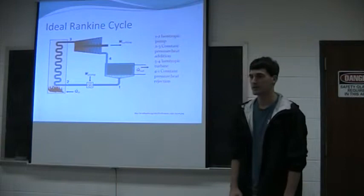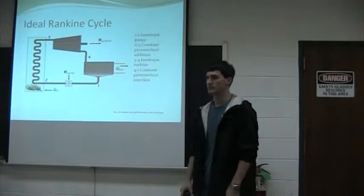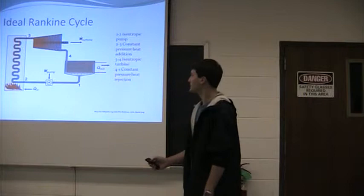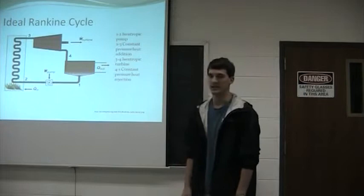Here's the ideal Rankine cycle. I'm just going to briefly describe the process and then go mainly through the results. There's four main components: the pump, the boiler, the turbine, and the condenser. One to two is the pump, isentropic in the ideal situation. Two to three is the boiler, constant pressure heat addition. And three to four is isentropic again. However, you'll see my TS diagram later, it really is not. And four to one is constant pressure heat rejection as it goes back to the liquid phase.